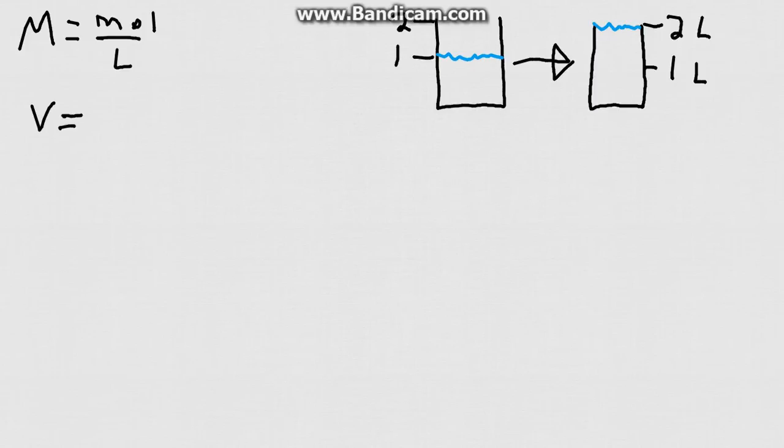If we wanted to find what the quantity of moles was in this cup, let's say that the concentration is 4 moles per liter and there's 1 liter in there. To find out how many moles we have in there, we would write moles equals molarity times volume.